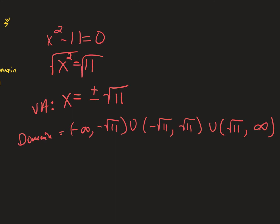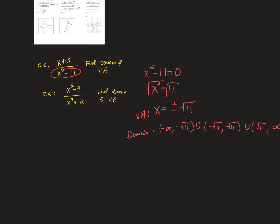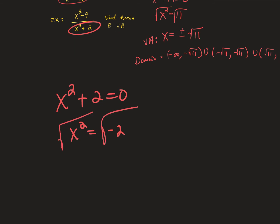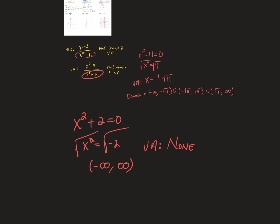What about if the denominator is x squared plus 2? Set it equal to zero: x squared equals negative 2. Can you take the square root of negative 2? No — so there are no domain restrictions. The denominator can be anything — your domain would be negative infinity to positive infinity, and there are no vertical asymptotes. Just pay attention to stuff like that; I don't want you guys to get tripped up on silly stuff.